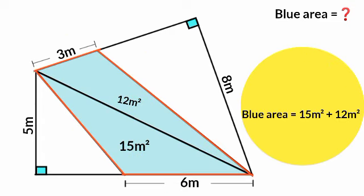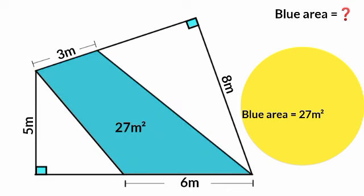Blue area equals 15 square meters plus 12 square meters, which is 27 square meters.